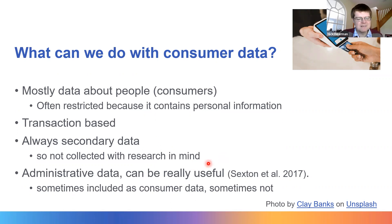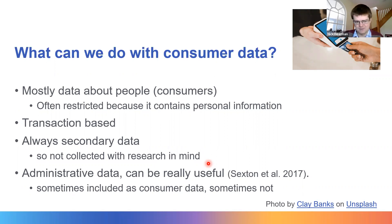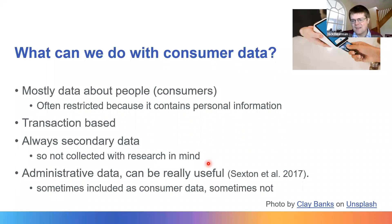It's also worth mentioning administrative data here, which is sometimes considered consumer data and sometimes separately, depending on how you define it. Administrative data is similar individual-level transaction data, but collected by the government. At one level this could be the census, but equally it includes things like HMRC tax records, DVLA records, and school census data. It's usually collected with different aims in mind, but sometimes the same approaches and tools are really helpful, so some of what we'll cover is relevant for administrative data as well.